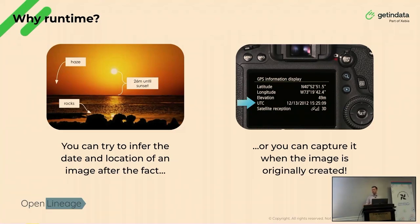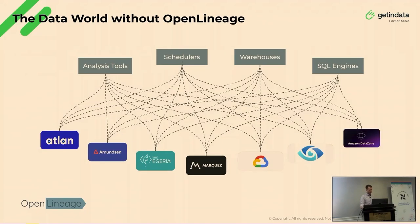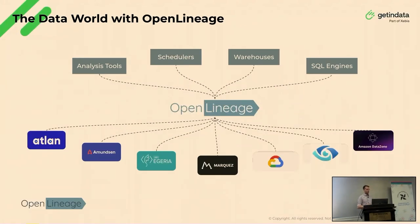Before there was a standard between metadata producers and consumers, there was sort of point-to-point discussion, reverse engineering, and adjusting to all the different changes appearing in other tools — some of them closed source. There was a lot of unnecessary effort. The best solution is to just let everyone speak the same language. It doesn't matter if you run your jobs on Snowflake, AWS, whether you use Spark, Airflow, or DBT — everyone can emit lineage that everybody will understand.